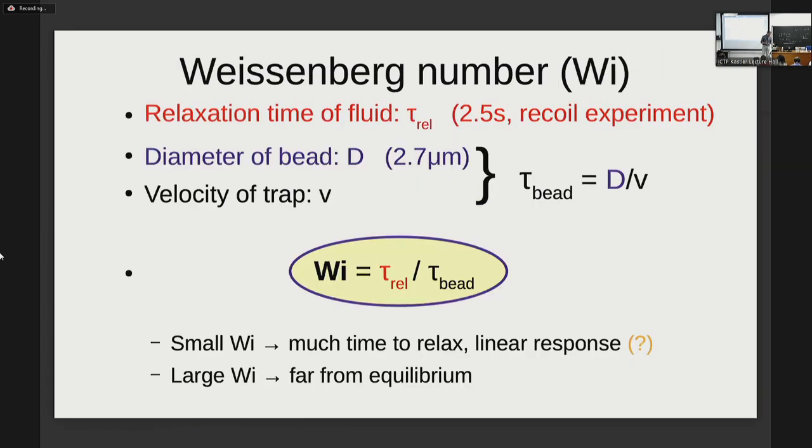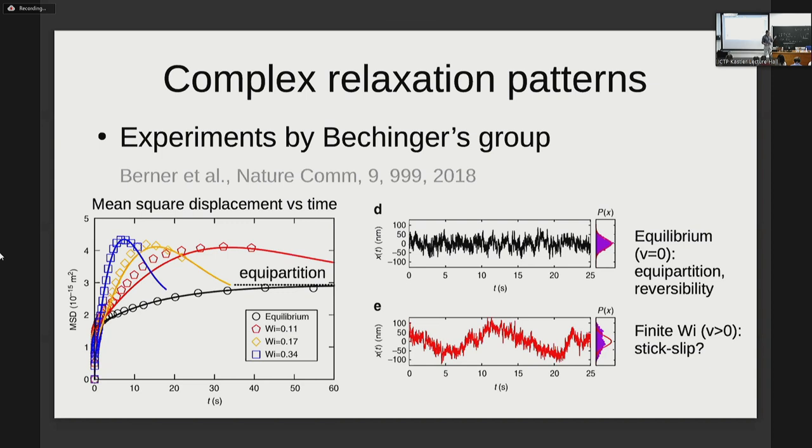So there is a constant velocity V pulling the trap and so the bead. And in the end, one can quantify how fast this is going by this dimensionless Weissenberg number, which is the ratio of two timescales. One is the relaxation timescale of the fluid to be found. And the other one is given by this ratio of dimension of the sphere divided by the velocity of the trap. So as long as the Weissenberg number is smaller, it's meaning that one is essentially in equilibrium and the fluid has enough time to rearrange. If the Weissenberg number is large, instead, one is far from equilibrium.